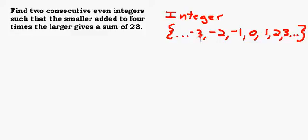What we're trying to find are two consecutive even integers. Your even numbers are two, four, six, eight, negative two, negative four, negative six, negative eight - those are your even numbers.